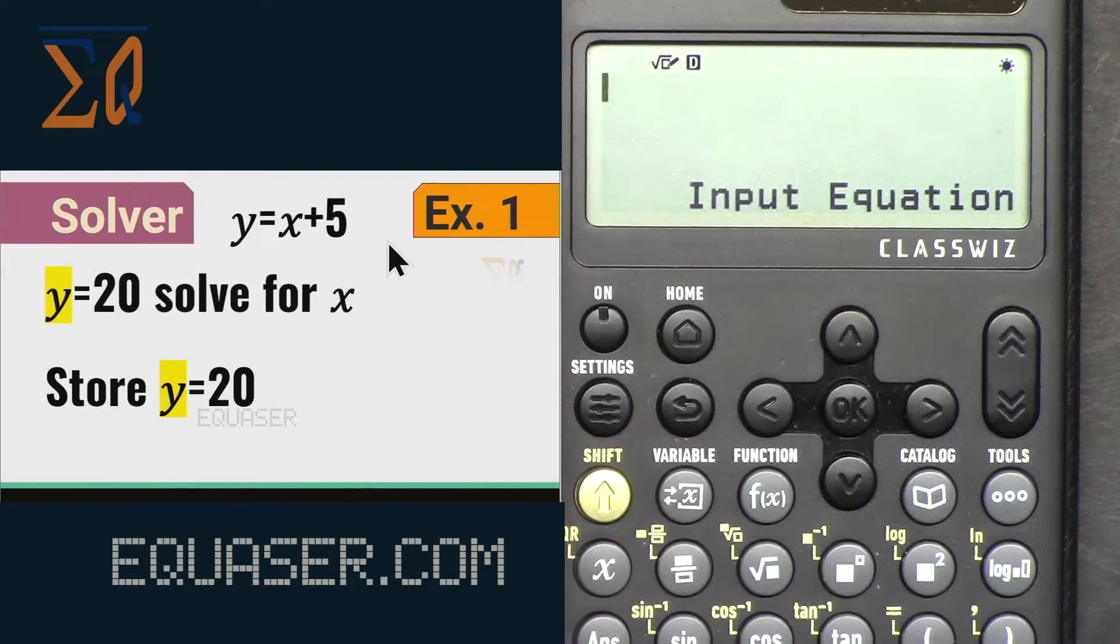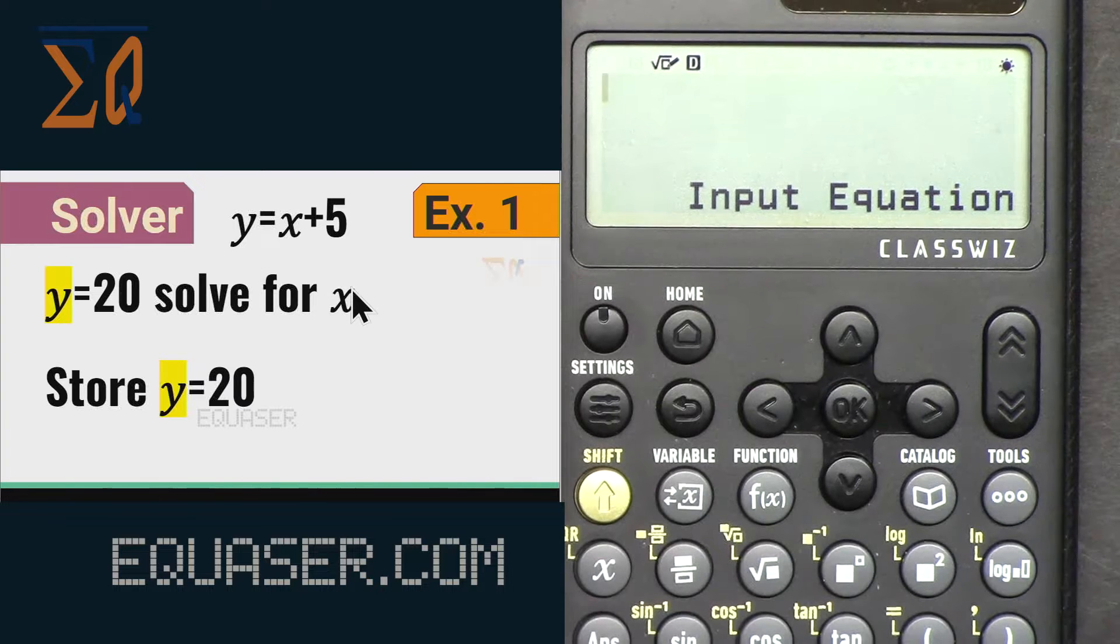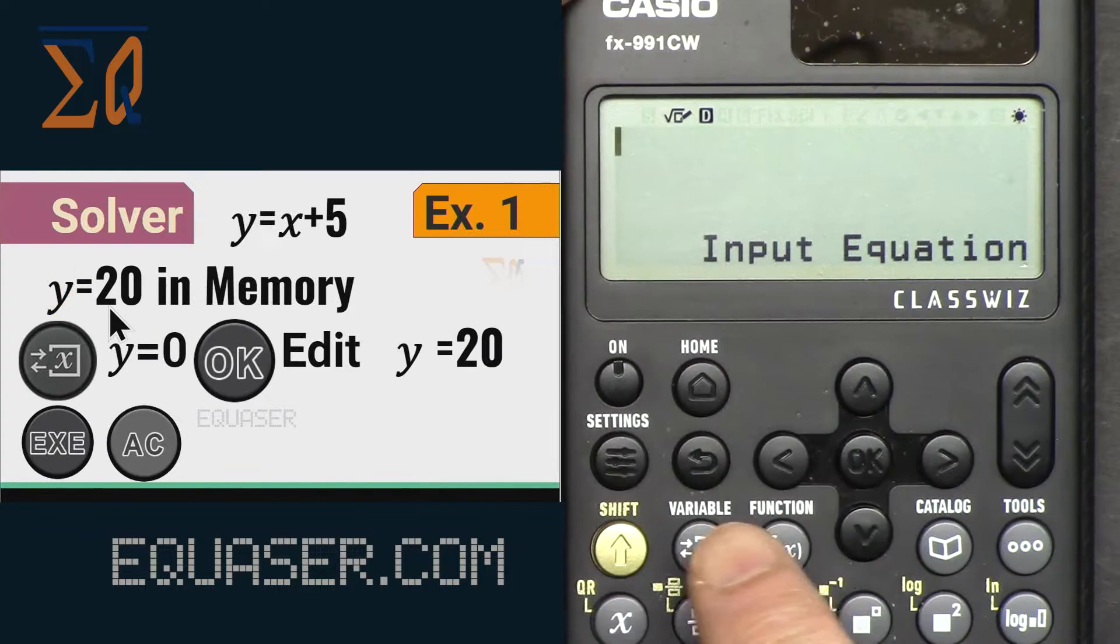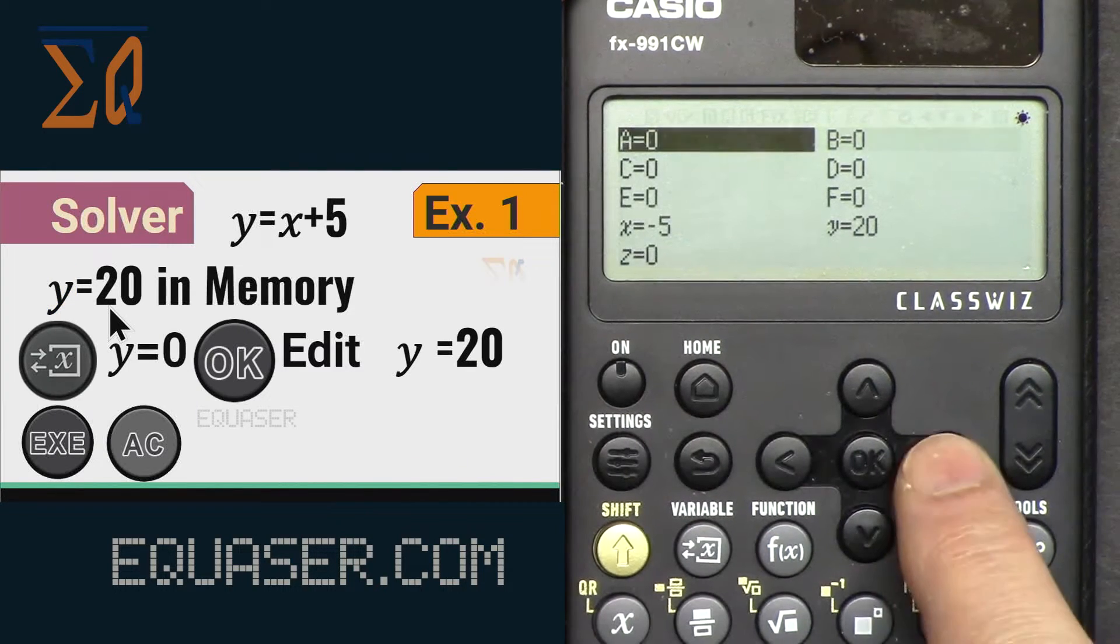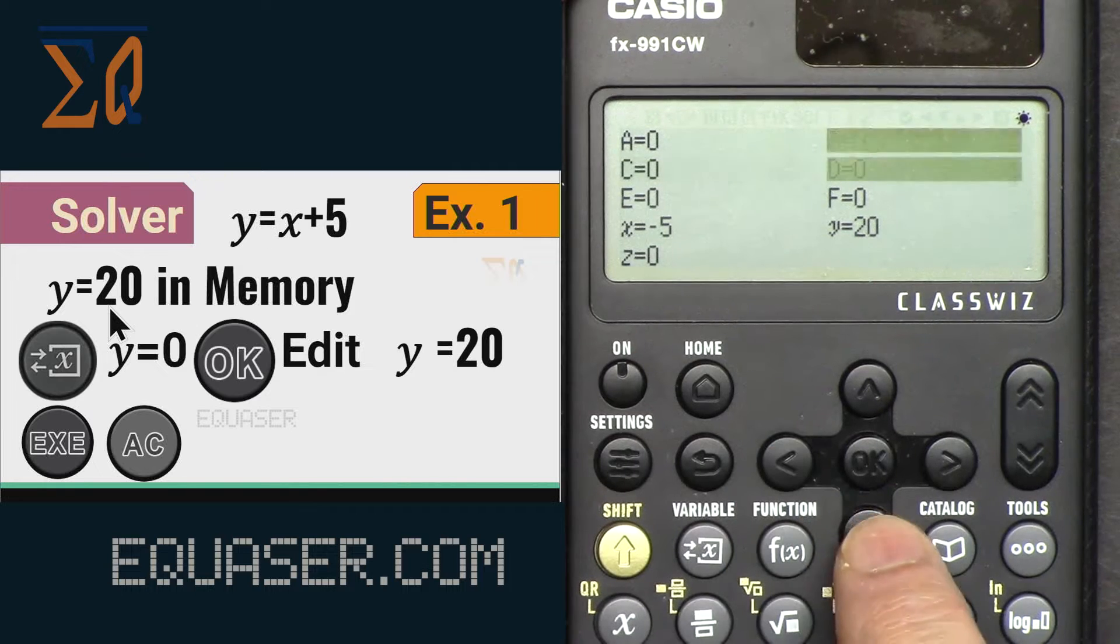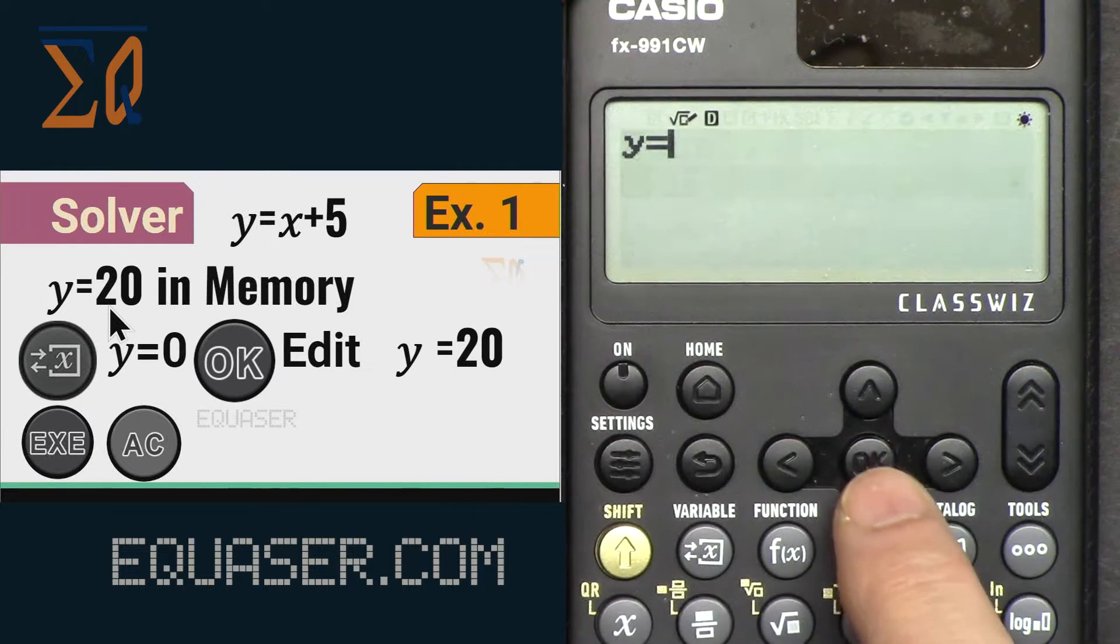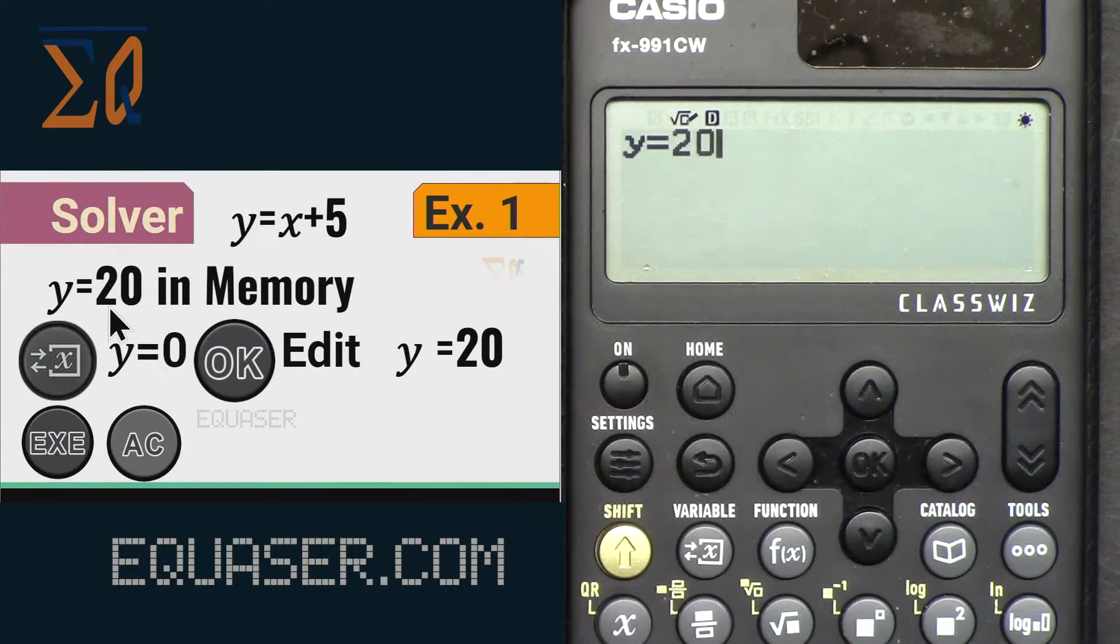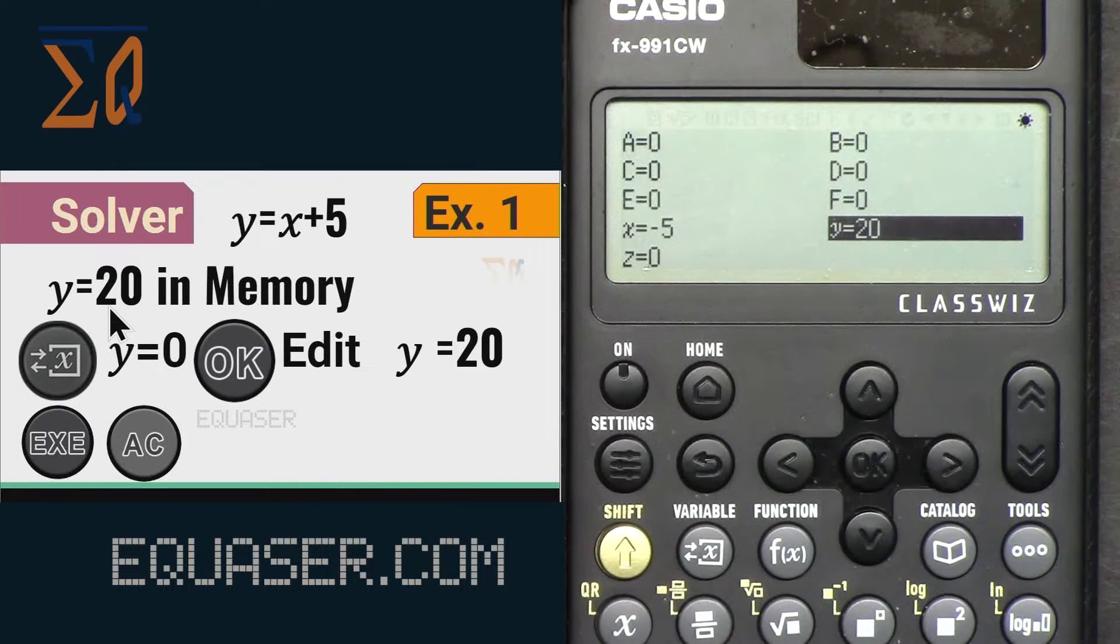Now our first example is y equals x plus 5. We have y equal 20 and we want to solve for x. For that, we have to store y into the memory. Press this button, go to y and then edit, and then type 20 and press equal sign, and then all clear.